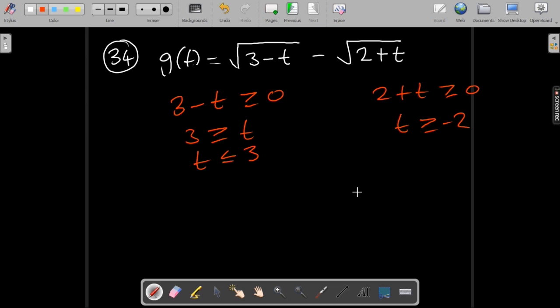So these are two answers but they have to be combined because this is one function. So where do they overlap? We can try to think of this on a number line. So minus 2 would be somewhere there and 3 would be there.